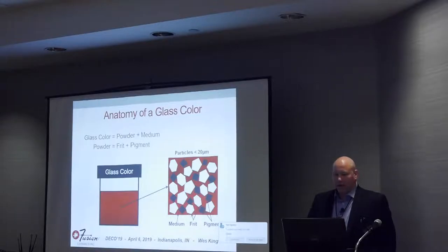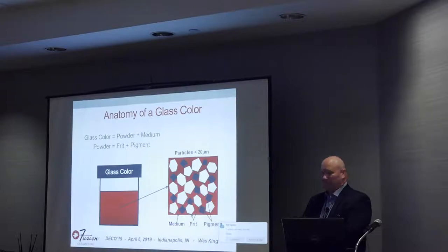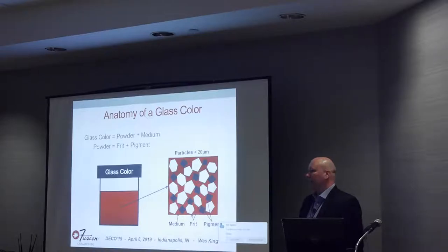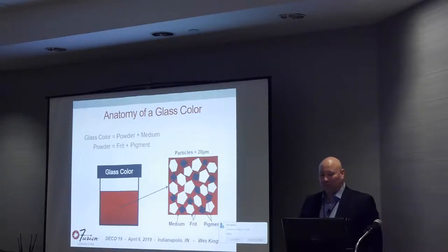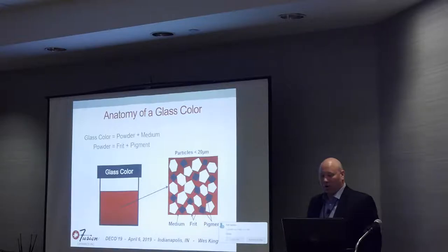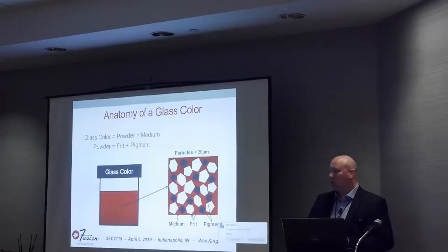Glass color equals powder plus medium, and powder equals frit plus pigment. That's about as simple as we can make it—it comes to you in a can if it's a paste. Looking at it microscopically, most of these particles are very small—less than the diameter of your hair, about 20 microns. When it's mixed up properly, you have medium coating in between all the particles. You don't have clusters of particles stuck together; the medium is in between all of them.